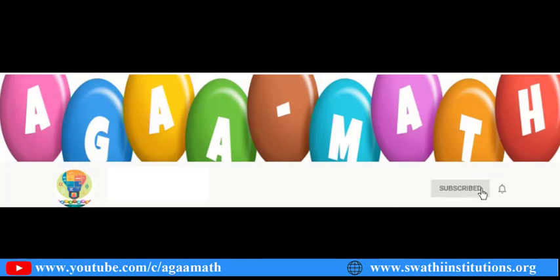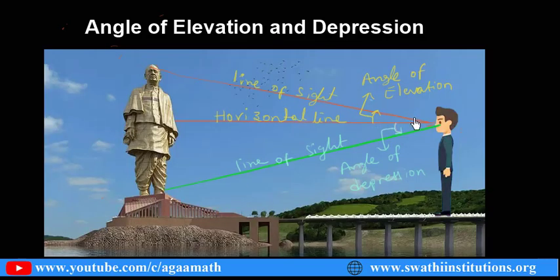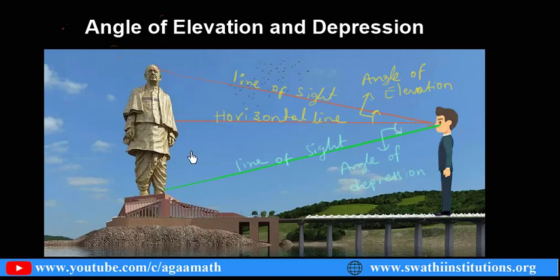Subscribe and click on the bell icon for more notifications. So simply: the angle made with the horizontal line towards a higher level is the angle of elevation; when you look at the foot of the statue it is the angle of depression.